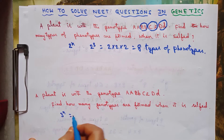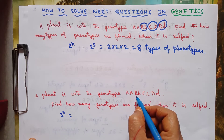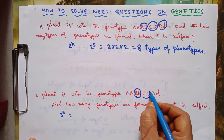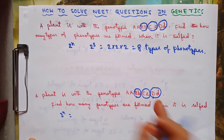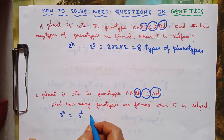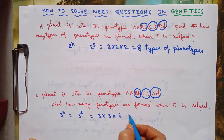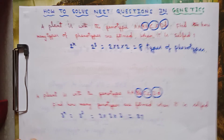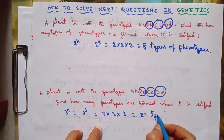Applying the formula 3^n: n is the number of heterozygotes, which is 1, 2, 3 — three heterozygotes. So 3^3 = 3 × 3 × 3 = 27 types of genotypes are formed.